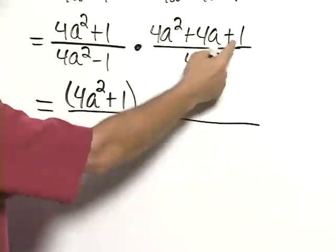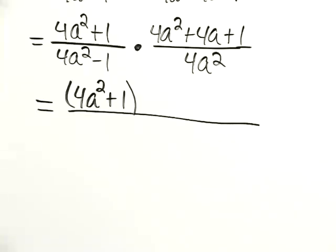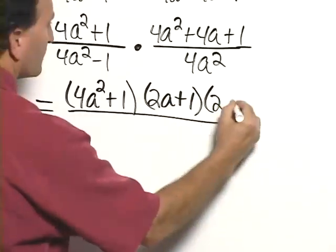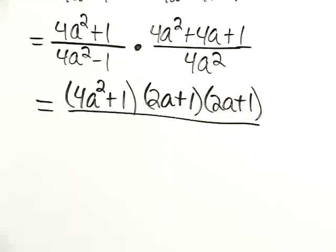Now, 4a squared plus 4a plus 1 is a perfect square trinomial. It factors as 2a plus 1 times 2a plus 1.